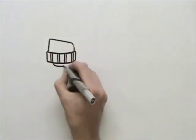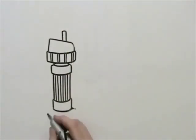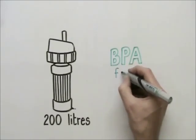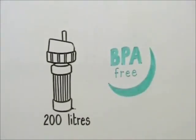The filters will last for 200 litres before they need replacing, and additional filters can be bought online. Even the bottle itself is made from a specially developed BPA-free plastic and approved for use with food and beverages.